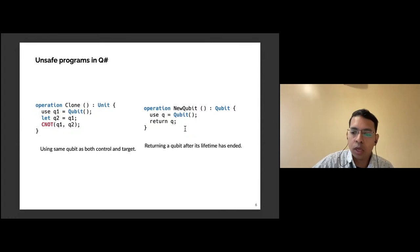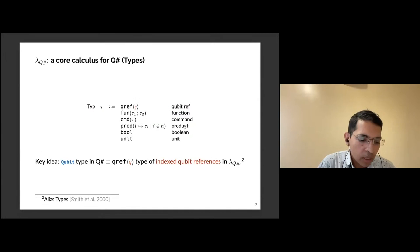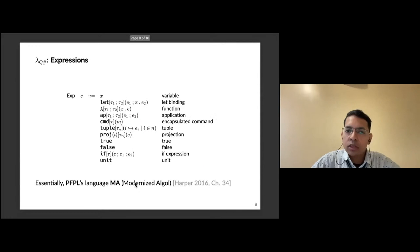Here is lambda QSharp, our core calculus. The types are pretty simple: function types, product types, booleans, units, and one for commands because this is a monadic language. The most important type is the qref type, indexed—it is a qubit reference type to model qubits in QSharp. The important thing is it is indexed by these orange color symbols q which represent a single logical qubit, and we are able to statically track identities of these qubits. This notion comes from alias types back in 2000 and goes back further to singleton types.